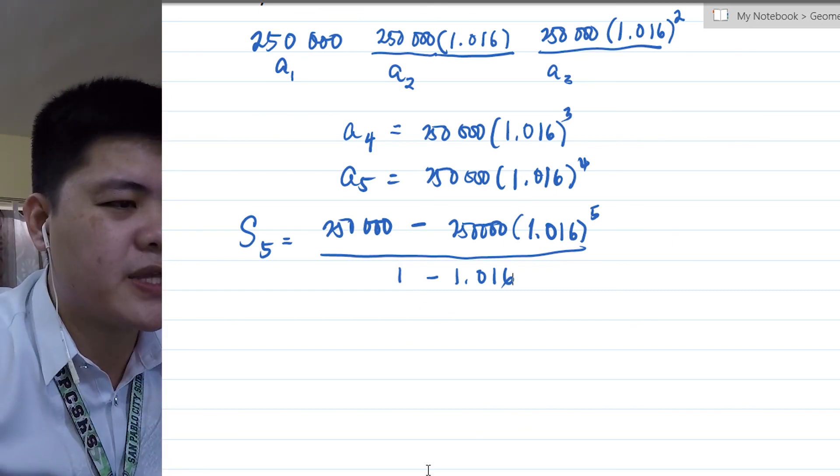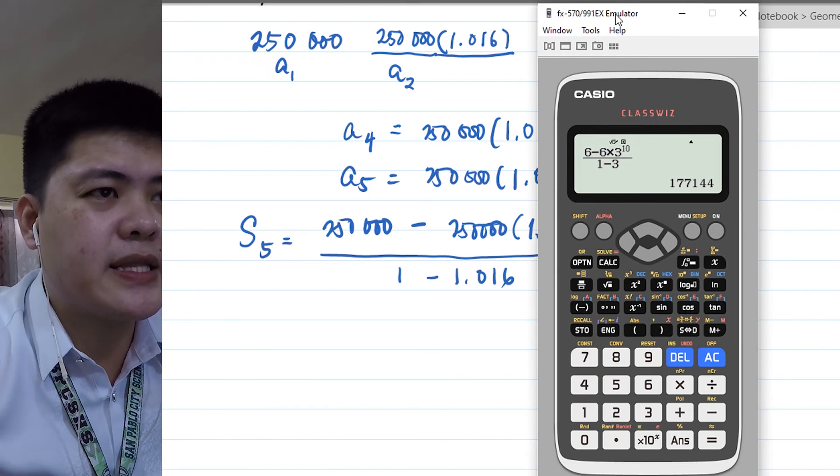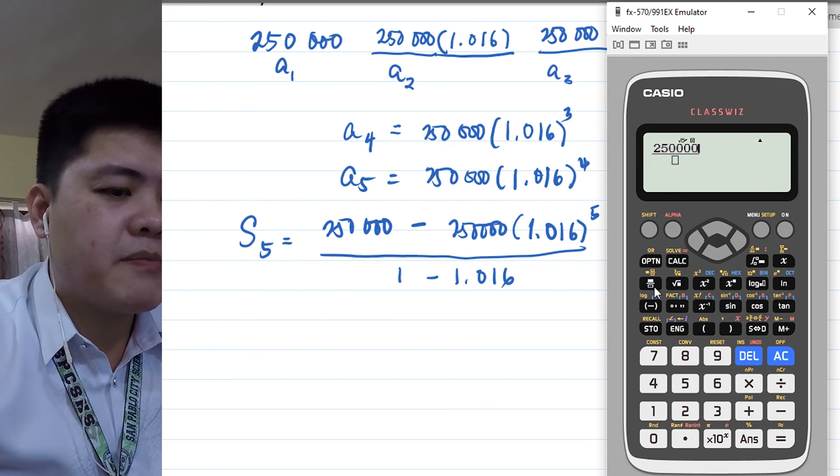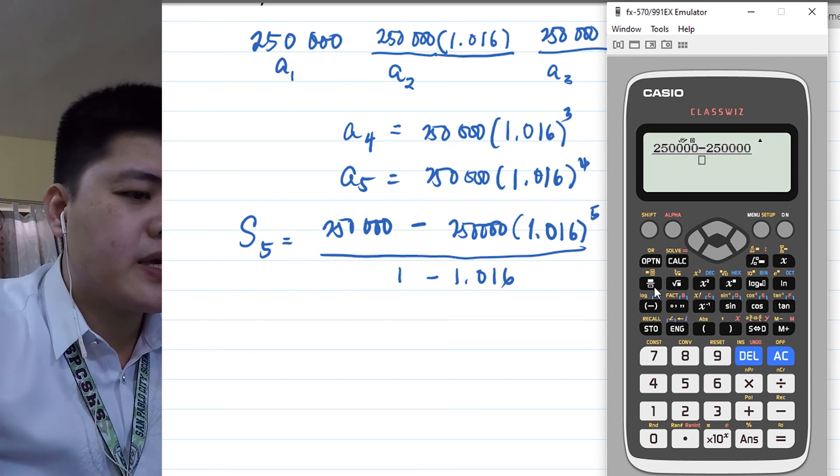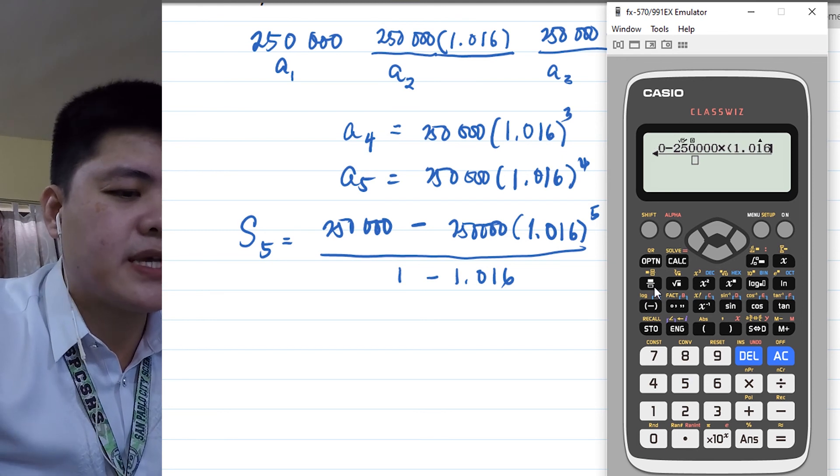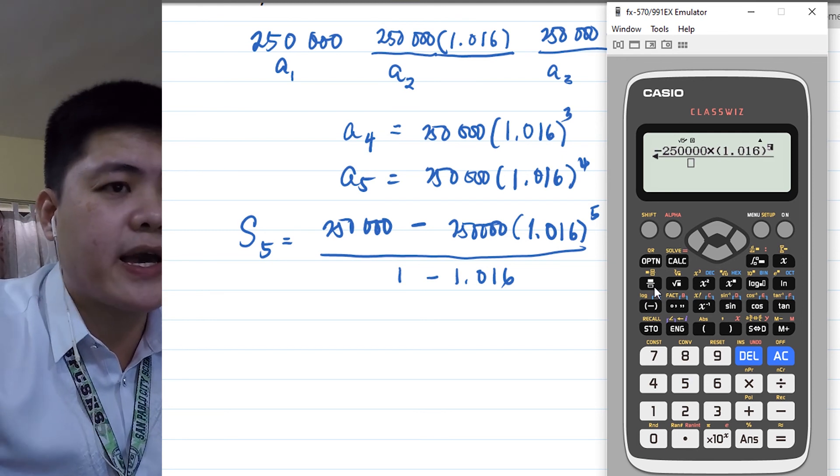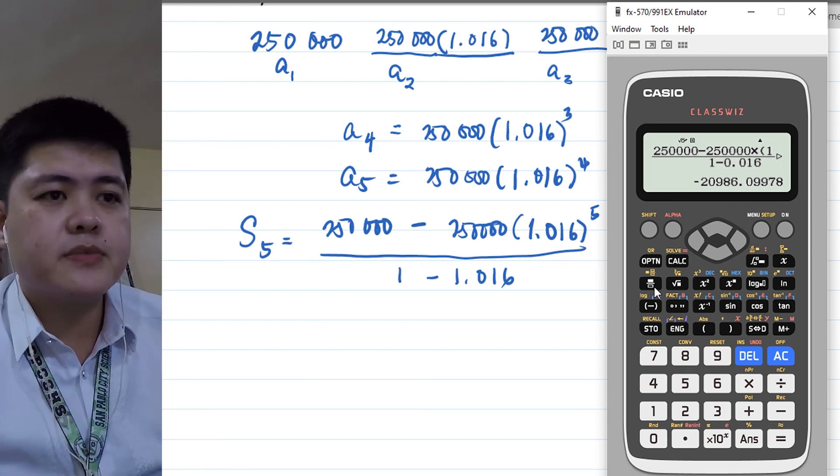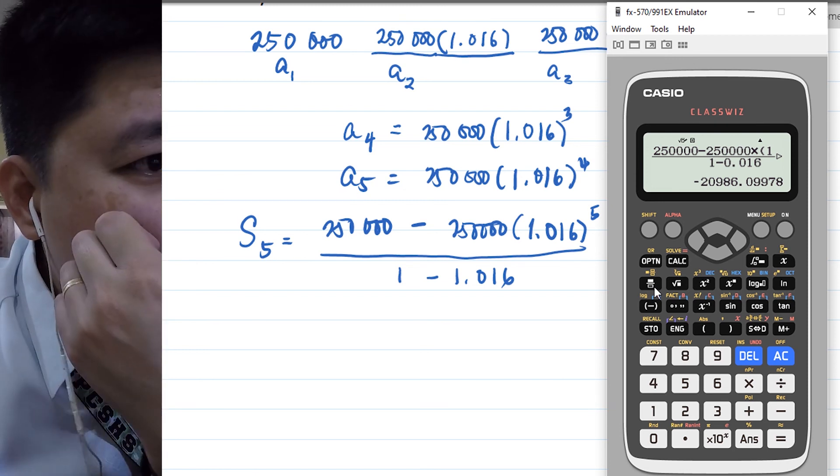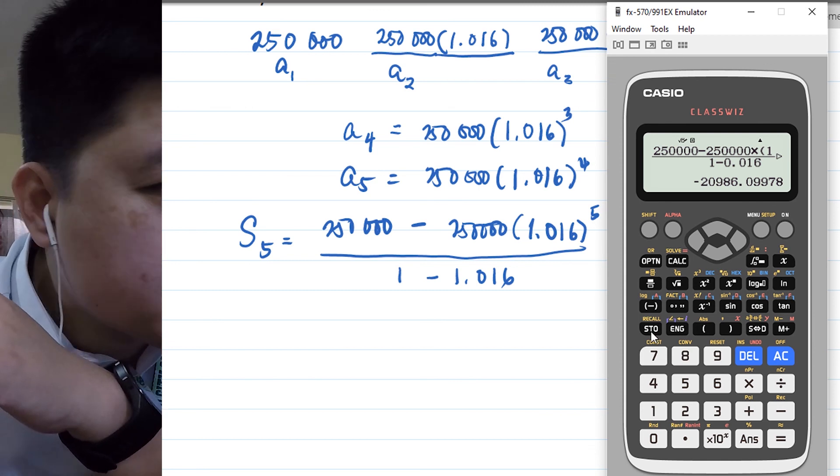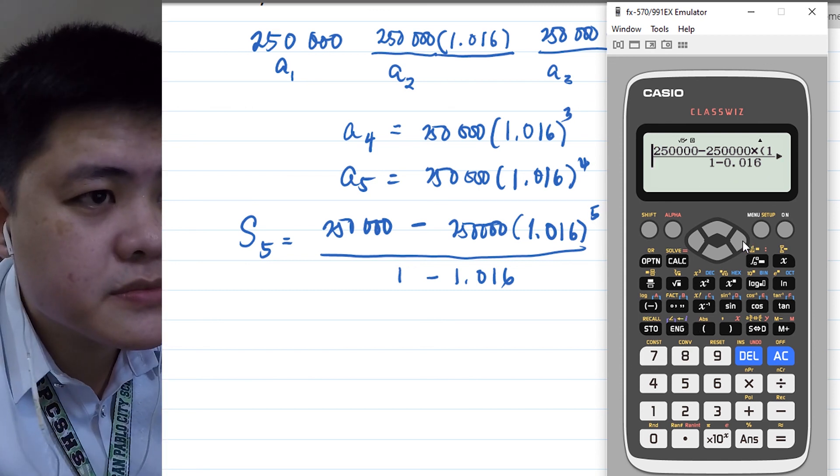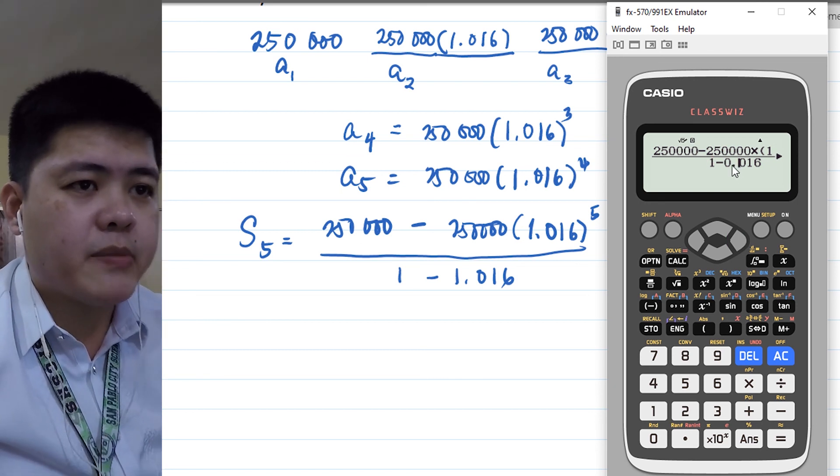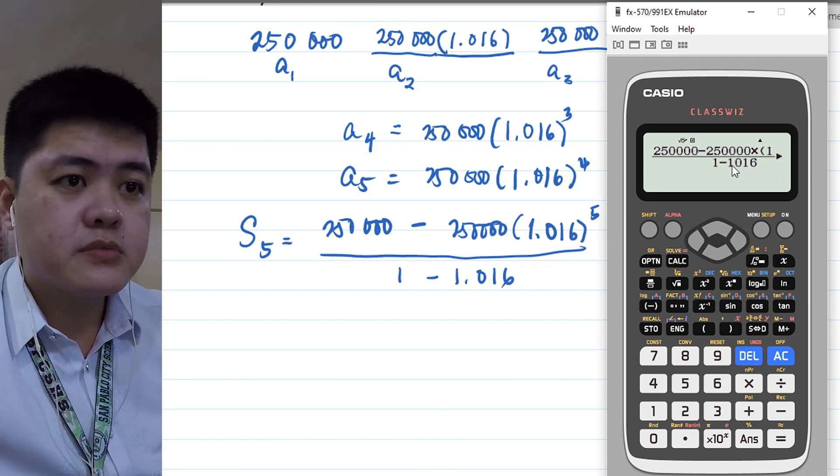Again, to compute this, let's get our handy-dandy calculator. Let's plug in. You have 250,000 minus 250,000 times 1.016 raised to 5 over 1 minus 0.016. So the answer is, why is it negative? Okay, we pressed something wrong. Maybe something is missing. It shouldn't be negative. Ah, okay. So we're missing a 1 here at the bottom.